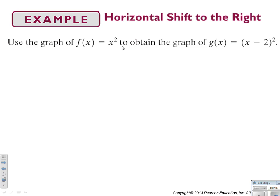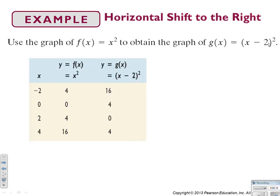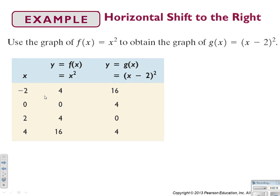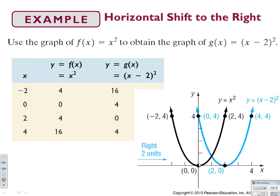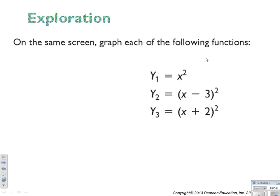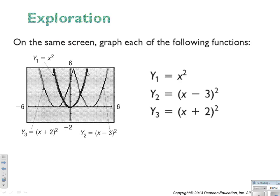Now we're going to shift to the right. We take our function and replace x with x minus 2, which changes our y-coordinates and shifts the graph to the right two units. Shifting to the left uses a plus. Looking at three things on the graph: the parent function, x minus 3 squared shifts it to the right three units, and x plus 2 squared shifts it to the left two units.